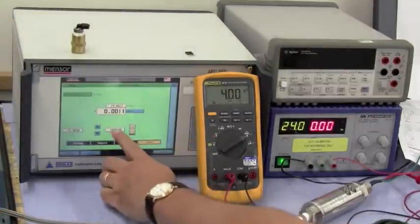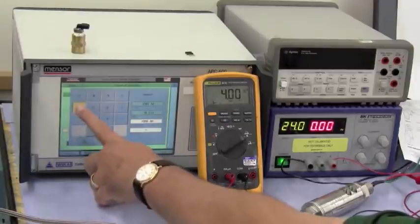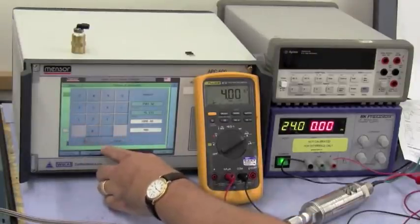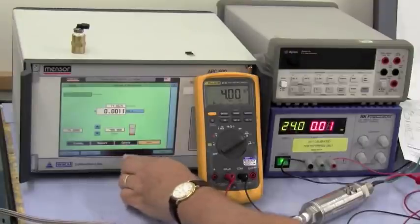So now we'll go ahead and we'll apply some pressure to the unit just to show that we have indeed spanned the control.